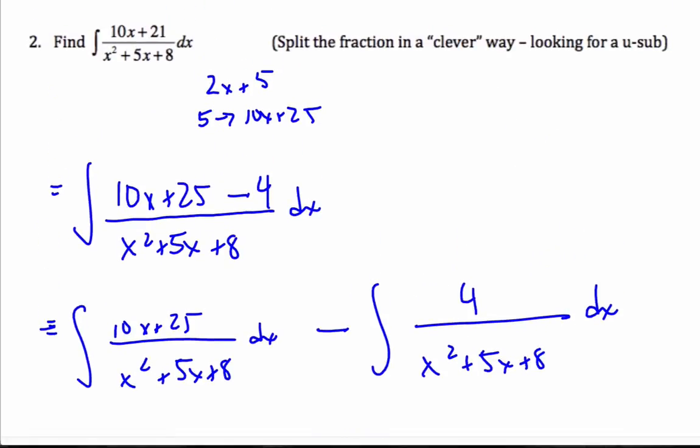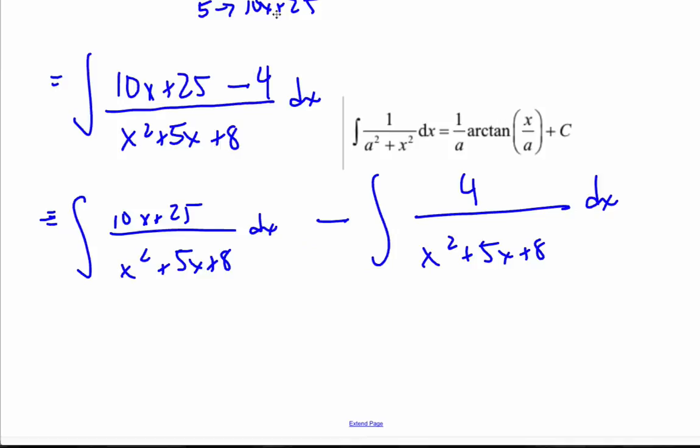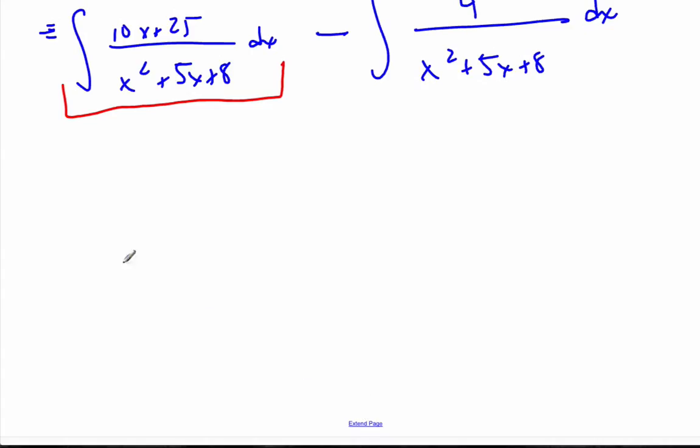And doing these integrals, I know this one here somehow has to turn into an arctangent. To do it, I'll have to complete the square. Whereas, the left-hand side rather, the one that I'll put here in red, this one here can be a u substitution. So, for this red one, let's make u equal to x squared plus 5x plus 8.